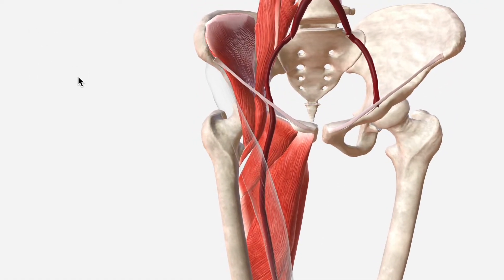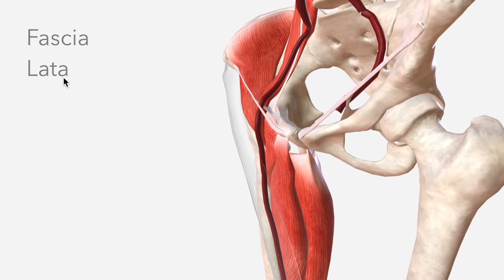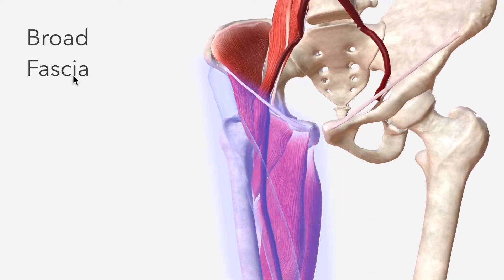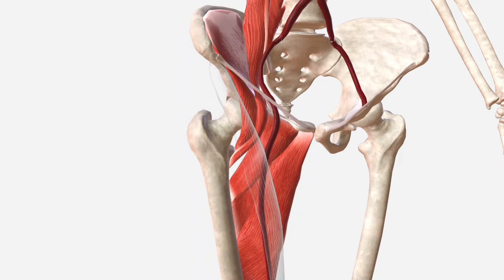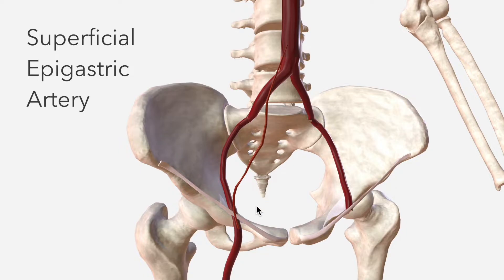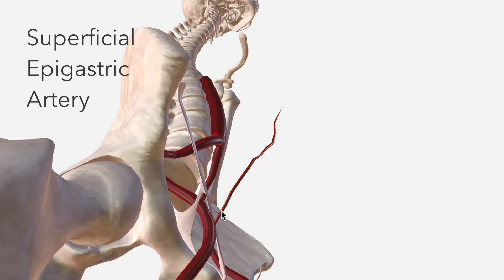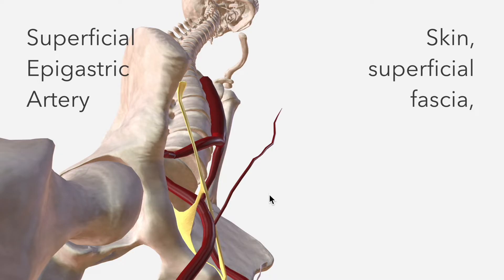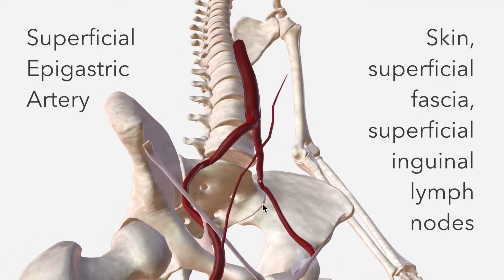The anterior border or roof of the femoral triangle is the fascia lata — literally the broad fascia — which encases all of this space. The first two branches of the femoral artery both pierce the fascia lata. The first of these is the superficial epigastric artery, which pierces the fascia lata to move anteriorly to the inguinal ligament, supplying the skin, superficial fascia, and superficial inguinal lymph nodes in this area.